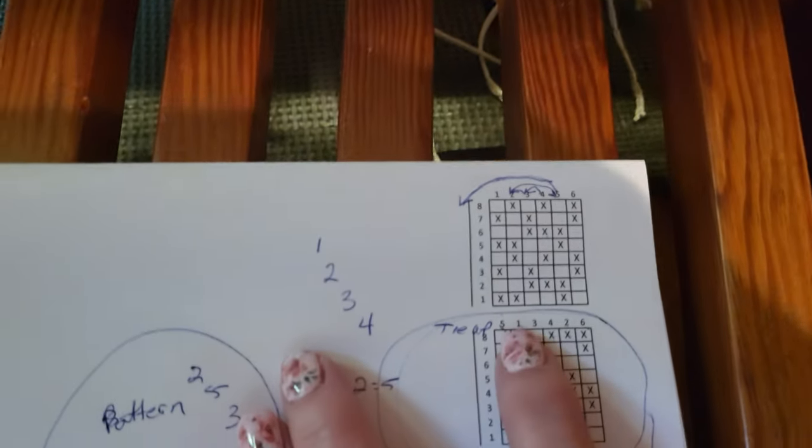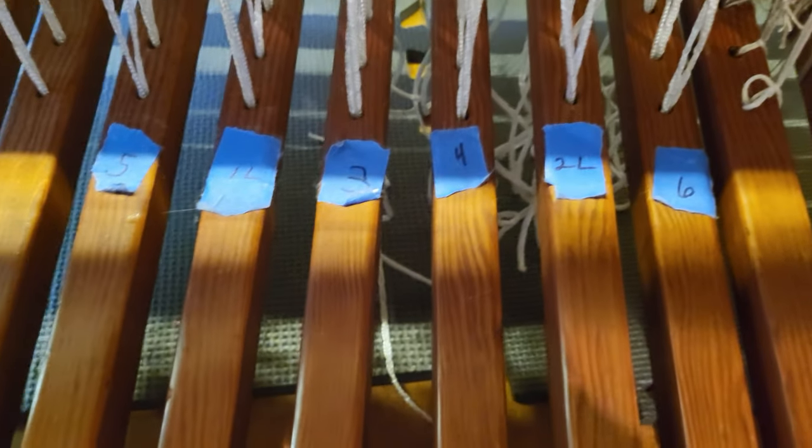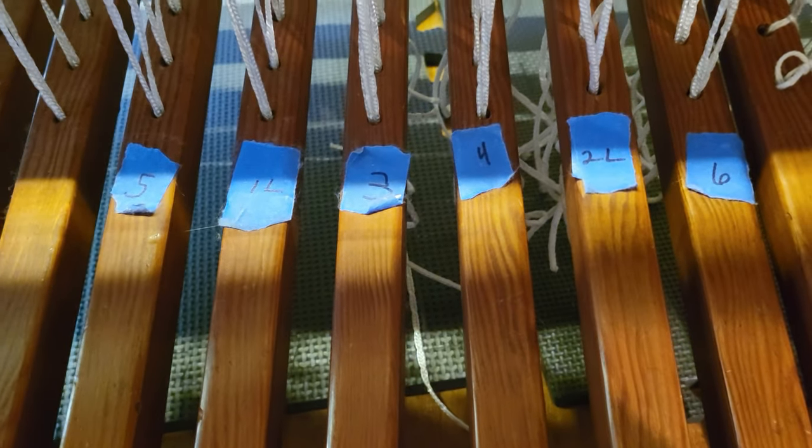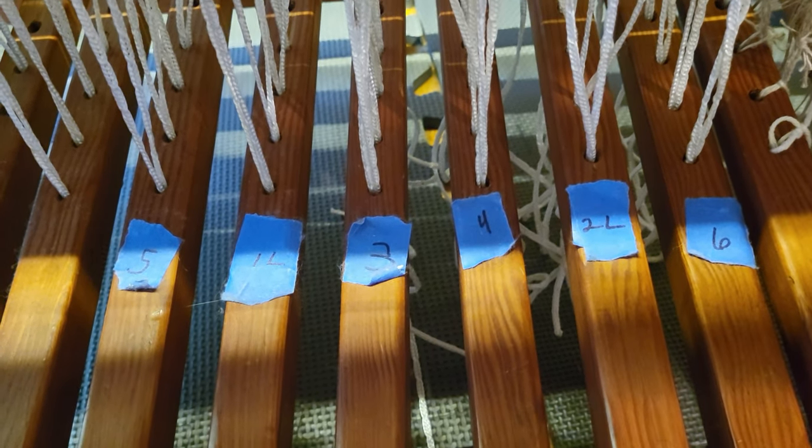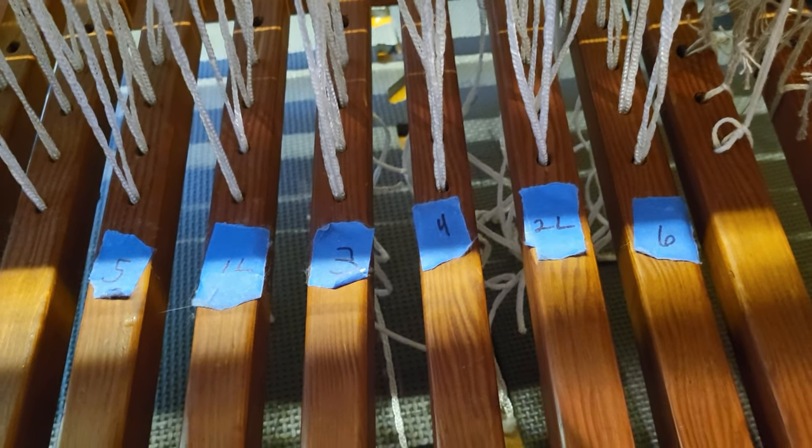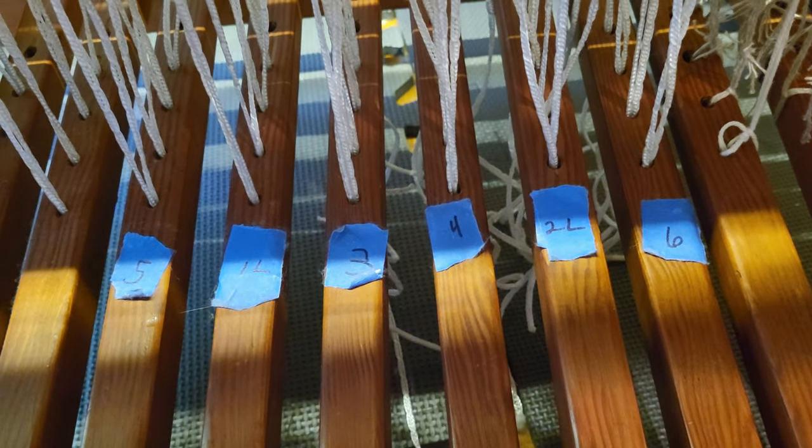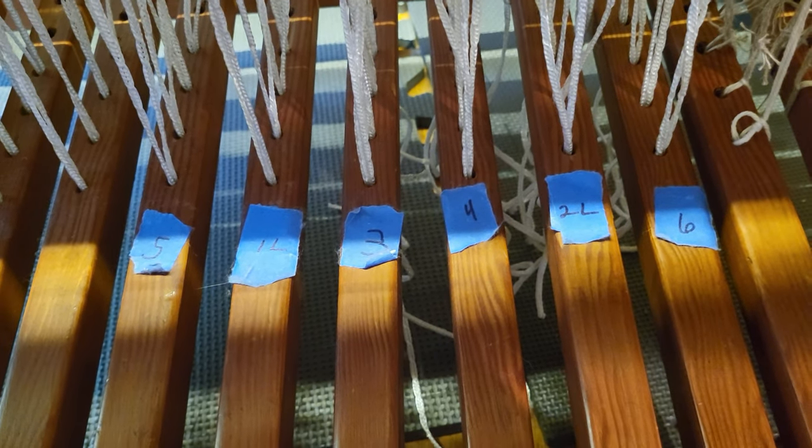Same here. Five, one, three, four, two, and six. So I just tied the treadling to the correct treadles and put the painter's tape on there so that when I'm weaving, I can glance at the treadle and see which one is correct.